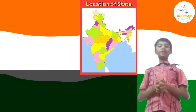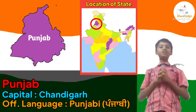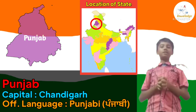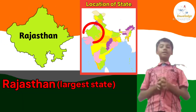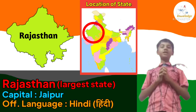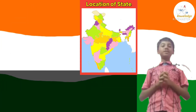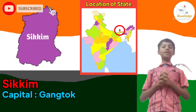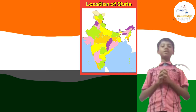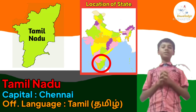State number 20: Punjab. Its capital is Chandigarh and its official language is Punjabi. Punjab also shares its capital Chandigarh with Haryana. State number 21: Rajasthan. Its capital is Jaipur and its official language is Hindi. Rajasthan is the largest state of India. State number 22: Sikkim. Its capital is Gangtok and its official language is English. State number 23: Tamil Nadu. Its capital is Chennai and its official language is Tamil.